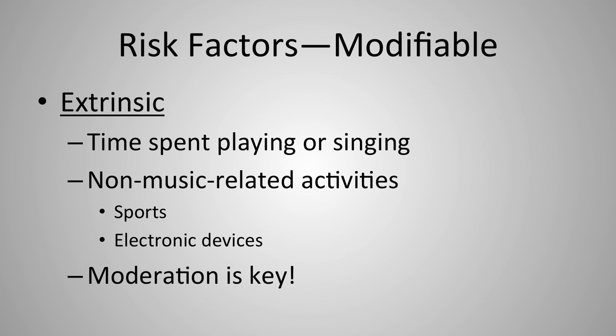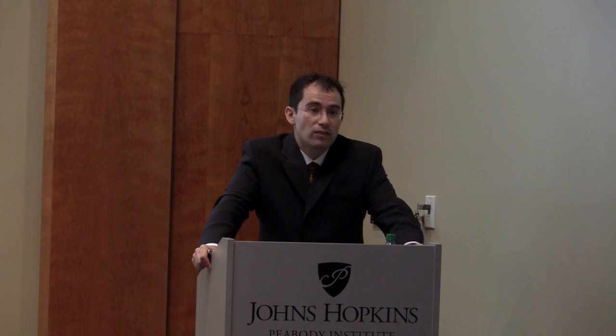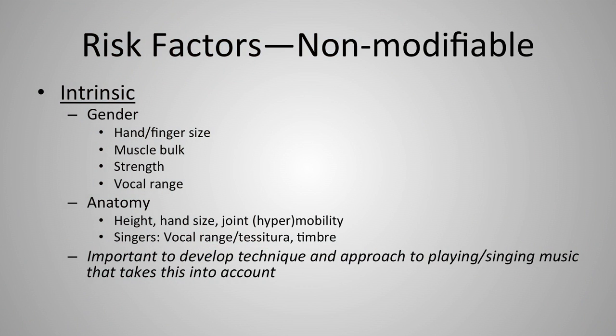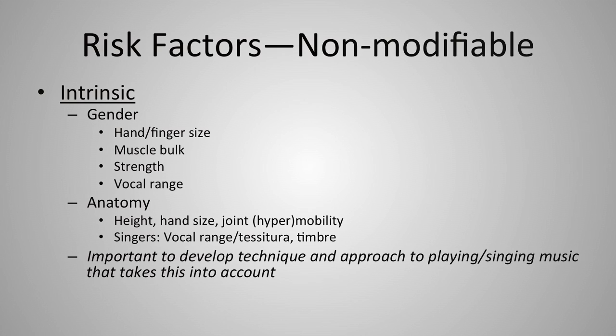Non-music-related activities, such as contact sports that risk hand injury, or overuse of electronic devices like smartphones and tablets, are also modifiable extrinsic factors worth considering. Non-modifiable intrinsic factors include gender: on average, hand and finger size is smaller in women, muscle bulk tends to be less, strength is about 15% reduced on average, and vocal range tends to be higher. Anatomy such as height, hand size, and joint mobility are also intrinsic non-modifiable considerations.